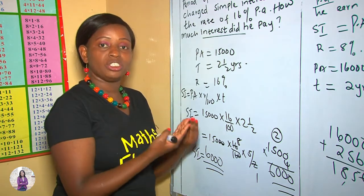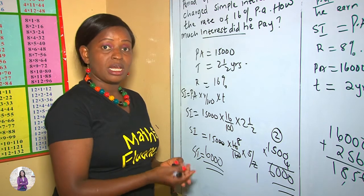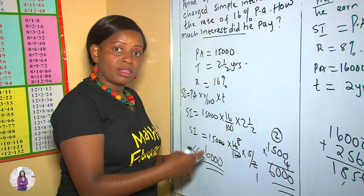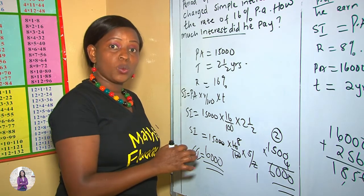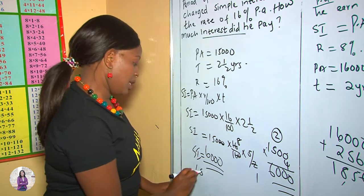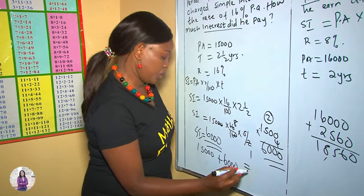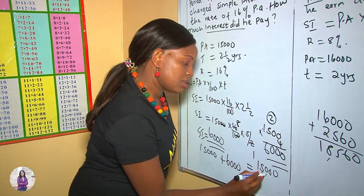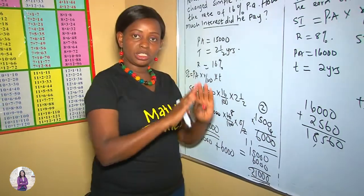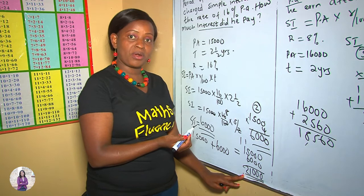In case they ask how much in total he returned to the bank or the institution that lent the money — remember he's returning whatever he had borrowed plus the profit that the money attracted within these two and a half years. So in total he is returning 15,000 plus the simple interest of 6,000, which equals 21,000. He returned a total of 21,000 to the institution that had lent him the money.